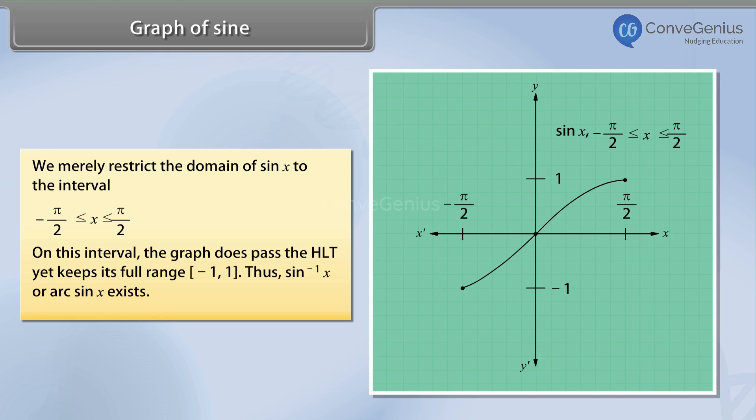On this interval, the graph does pass the HLT, yet keeps its full range minus 1, 1. Thus, sine inverse X or arc sine X exists. This is not the graph of sine inverse X. It is merely the part of the sine X function that is used to graph the inverse sine function.